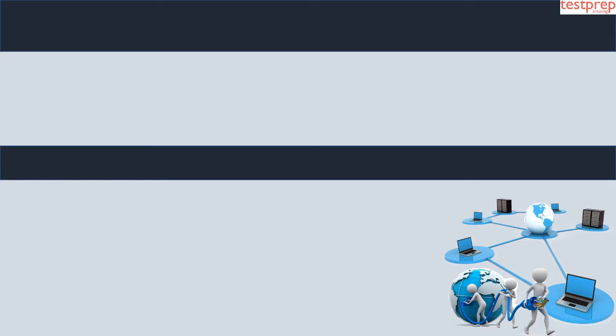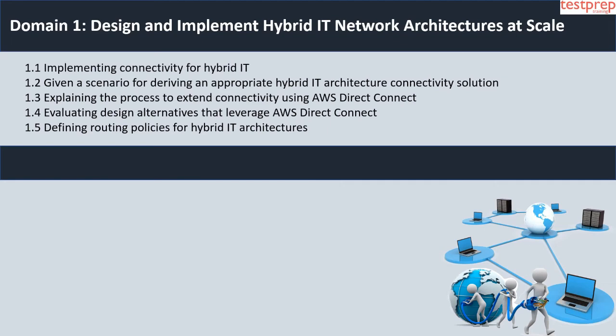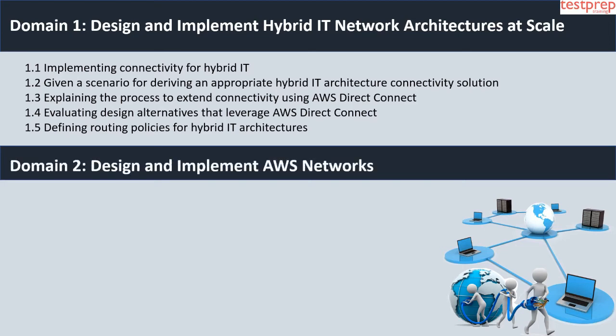Let us now discuss the core structure topics in detail. Domain 1: Design and Implement Hybrid IT Network Architectures at Scale — it contains five subtopics: first, implementing connectivity for hybrid IT; second, given a scenario, deriving an appropriate hybrid IT architecture connectivity solution; third, explaining the process to extend connectivity using AWS Direct Connect; fourth, evaluating design alternatives that leverage AWS Direct Connect; fifth, defining routing policies for hybrid IT architectures.